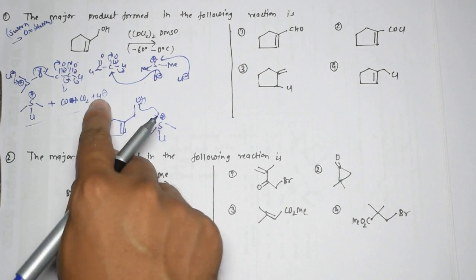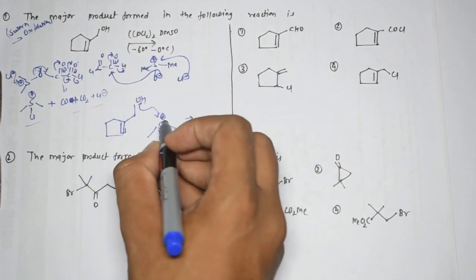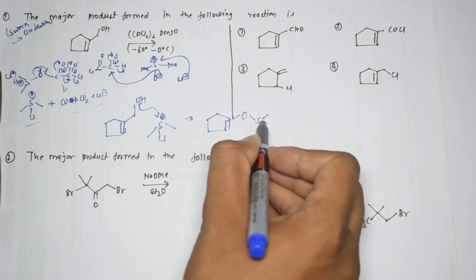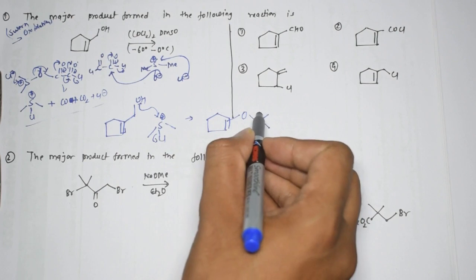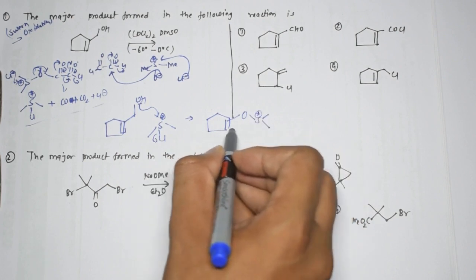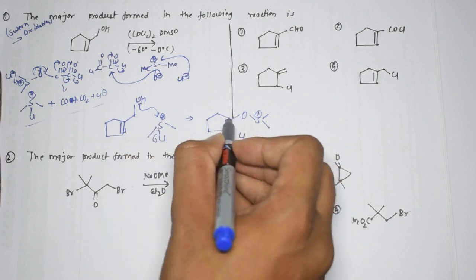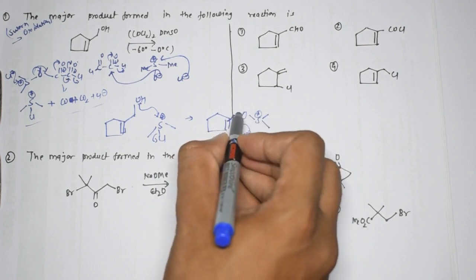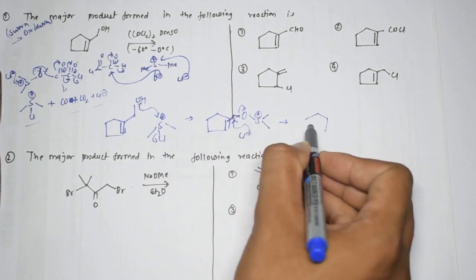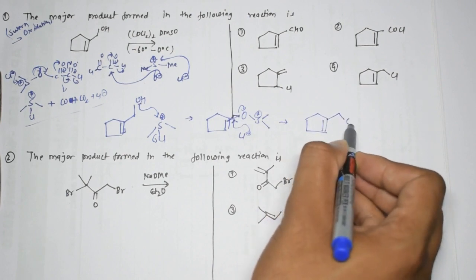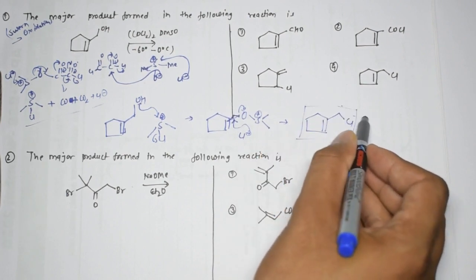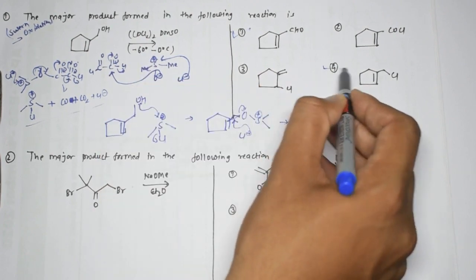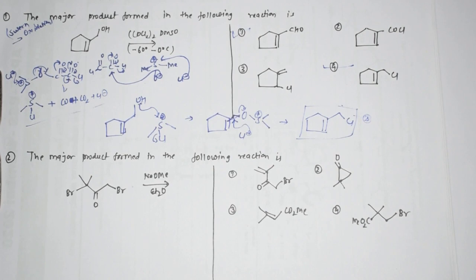The electron pair of oxygen attacks on S, similar to Swern oxidation. The difference is that in the normal Swern step we use a base, but here we only have Cl-minus. Cl-minus attacks at the CH₂ position, this bond breaks, and the product formed contains Cl. So if you use base you get the normal product, but without base at very low temperature, the fourth option - the chlorinated product - is correct.